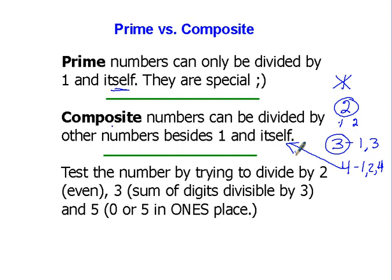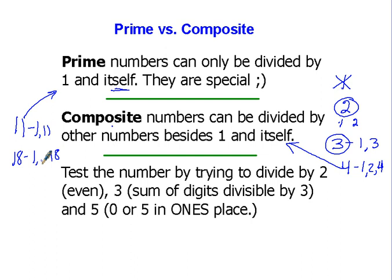Let's jump up to the number eleven. You can divide eleven by one and eleven, and there are no other numbers you can divide it by — that makes it special, so it's a prime number. How about eighteen? You can divide that by one and eighteen, but also by two and nine, which means it's composite because there are other divisors besides one and eighteen.